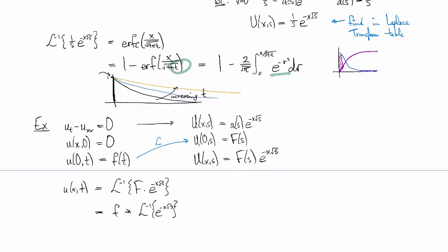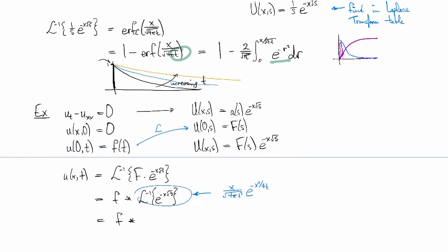And we already worked out that guy, so this is going to be F convolved with our complementary error function. Oh, sorry. This one's actually slightly different, because we don't have the 1 over s. So we go back to the table of Laplace transforms, and we find out that this one is actually x over square root 4πt cubed e to the minus x squared over 4t.